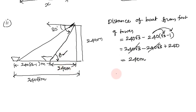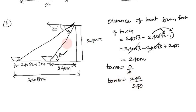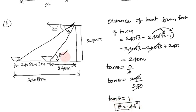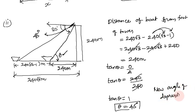Using tan theta equals opposite over adjacent: opposite is 240 meters and adjacent is also 240 meters, so 240 cancels with 240. Therefore tan theta equals 1, which gives theta equals 45 degrees. The new angle of depression is 45 degrees.